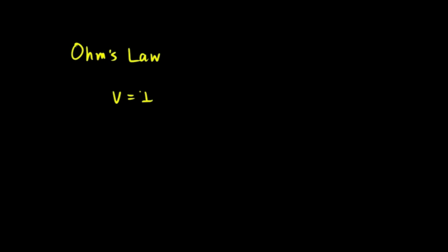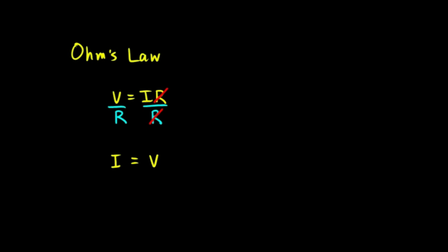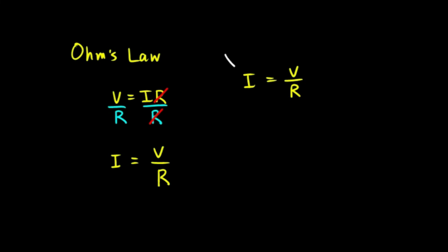Ohm's Law, commonly written as V equals IR, can be rearranged algebraically. If you divide both sides by R, the R on the right side cancels, and you're left with I equals V over R. So I equals V over R is just the original equation V equals IR rearranged. I is the current, V is the voltage, and R is the resistance.